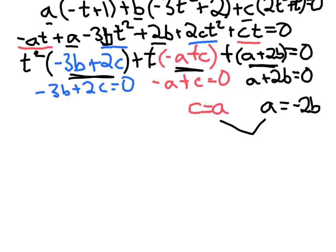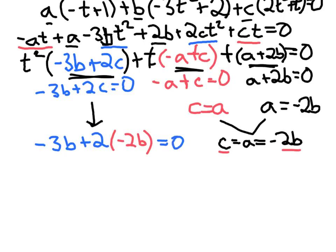And so putting these together, this implies that c equals a equals negative 2b. And now substituting into the first equation, I could write this now completely in terms of b. Negative 3b plus 2 times c. Well, c is equal to negative 2b, so 2 times negative 2b equals 0. So negative 3b minus 4b equals 0. So negative 7b equals 0, so b equals 0.